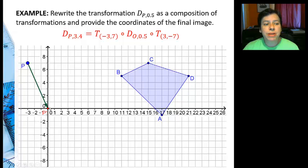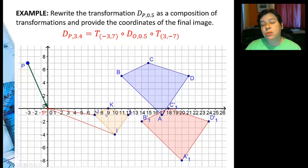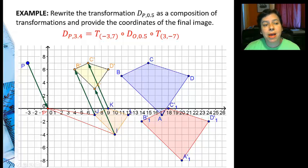So here's my point being translated down to the origin, and there's my pre-image being translated. Now I'm going to go ahead and do the dilation on this red image. So this is half. Now remember, because it's half, it's going to be smaller and closer to my point of dilation. Then I'm almost done. All I have to do is slide it back up the same way that it came, and that is my final image.